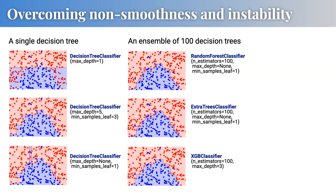The first strategy — randomized type — generates multiple decision trees using randomness, such as resampling the training data by removing 10% of samples, learning a decision tree on each modified dataset, and collecting multiple different trees. The second — optimized type — builds the first tree, makes a prediction, then generates the second tree to compensate for the first model's disadvantage, adding trees one by one to improve the overall ensemble's prediction accuracy.